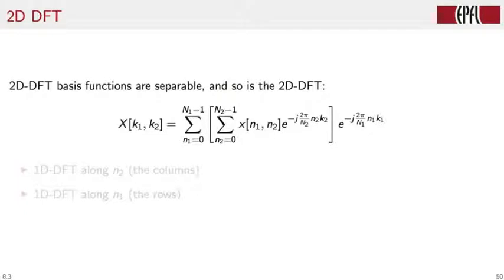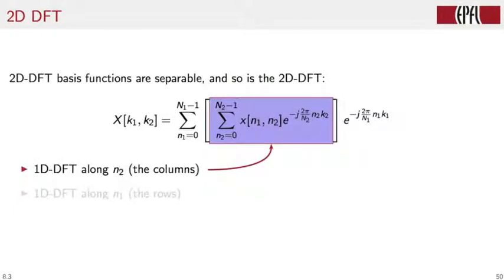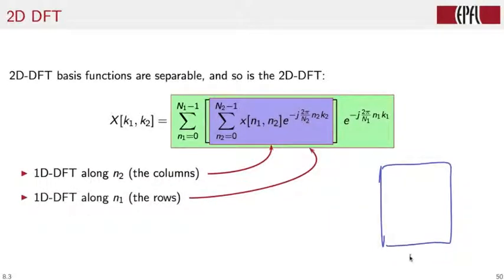The good news is that the two-dimensional DFT basis functions are separable. And so the DFT can be computed in a separable way. In particular, we first compute a 1D DFT along the columns. So if this is our image of size big N1 times big N2, we first compute big N1 DFTs of size N2 along the columns. And once we're done with that, we compute 1D DFTs along the rows.